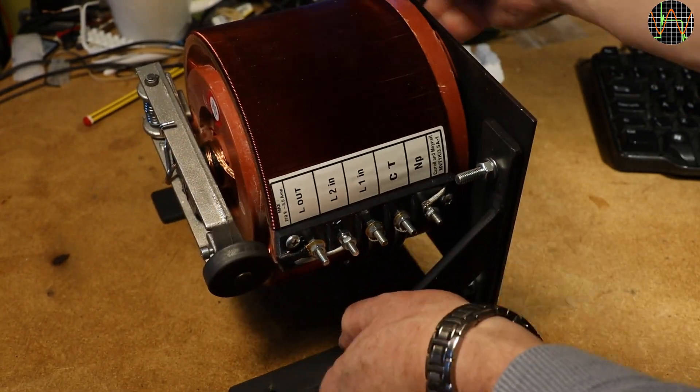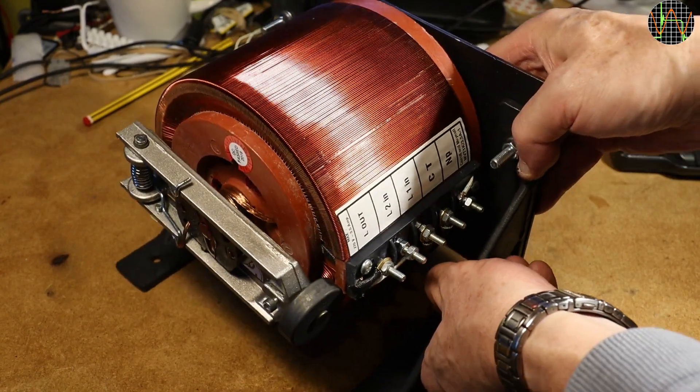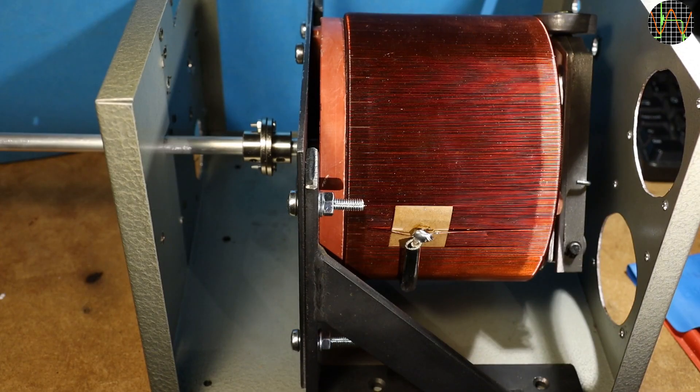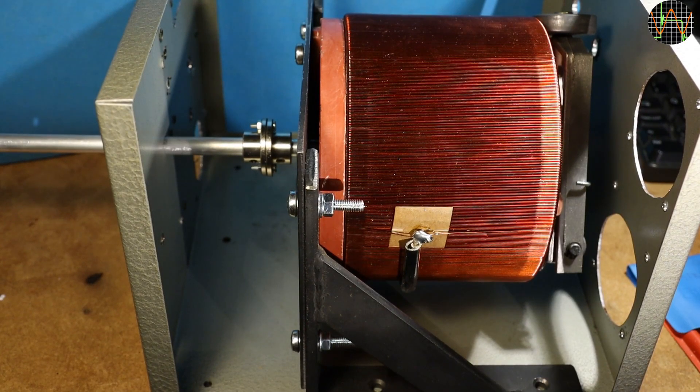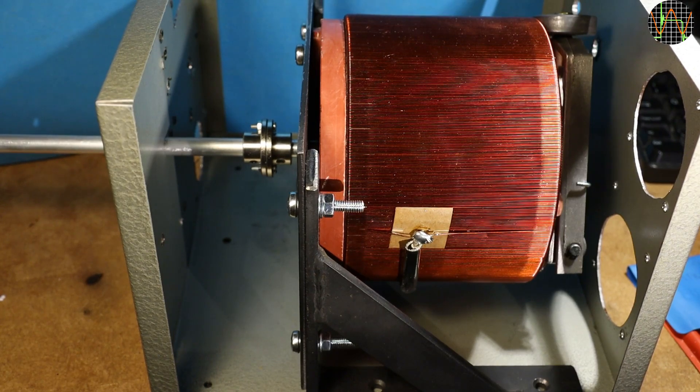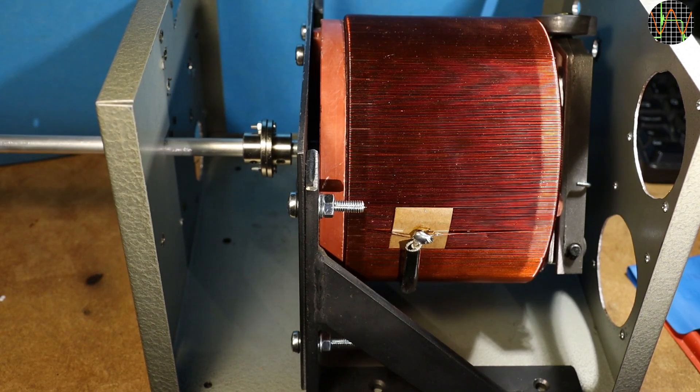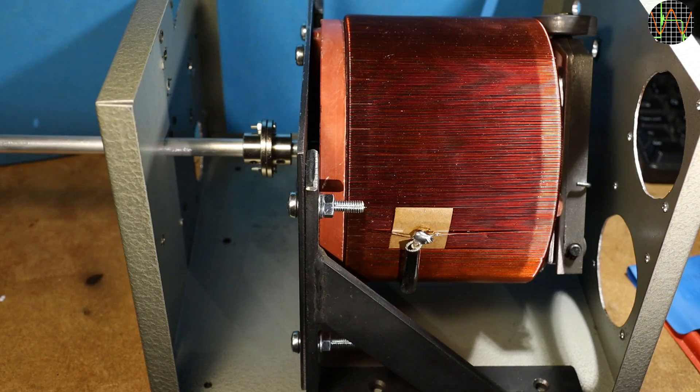And here is the beast ready mounted in its new home. You can see the round brush wheel that this transformer uses to contact the windings.